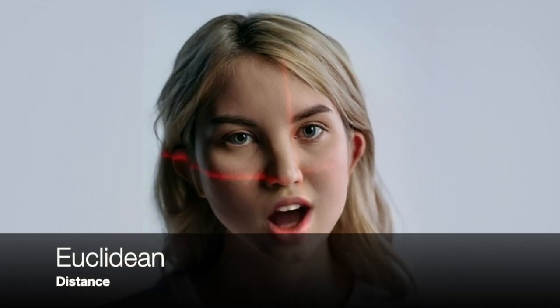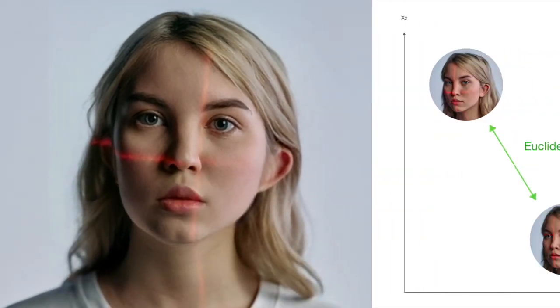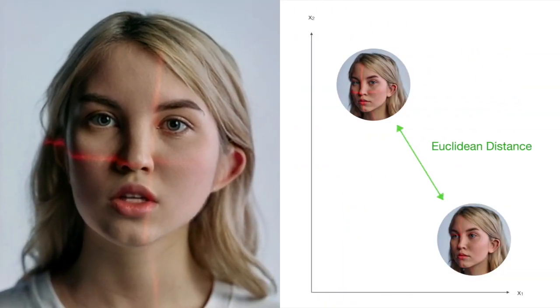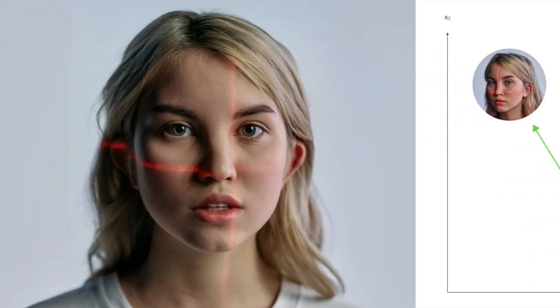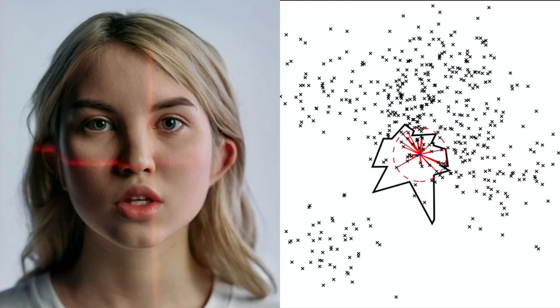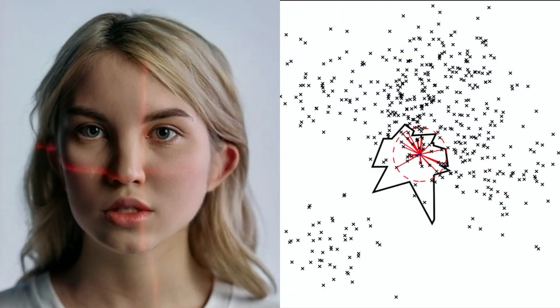Next, let's talk about Euclidean distance. This metric measures the straight-line distance between two points in a space. It's often used for clustering, such as grouping similar data points together. The output of Euclidean distance is a non-negative number, with smaller values indicating that the two points are closer together and larger values indicating that they're further apart.